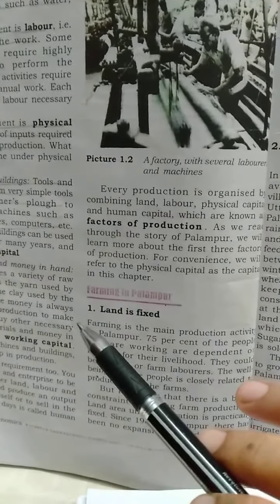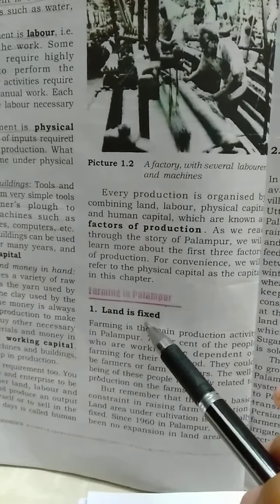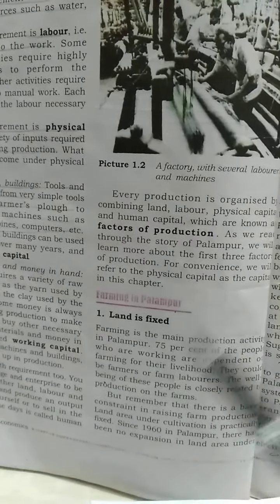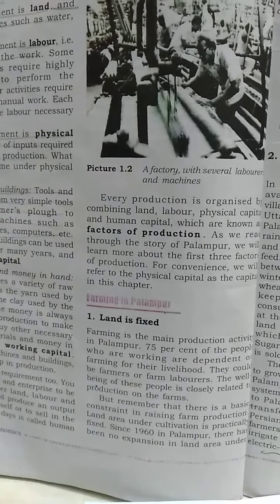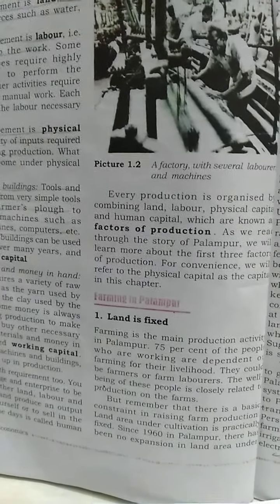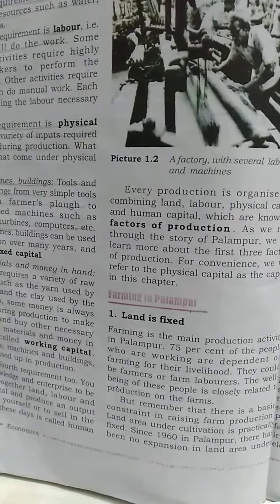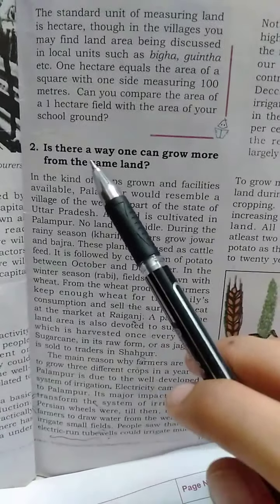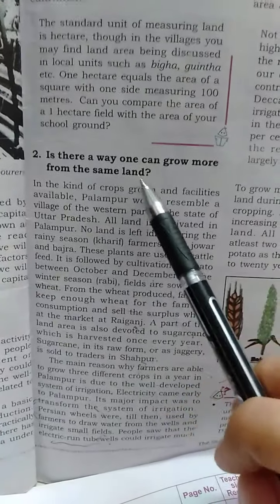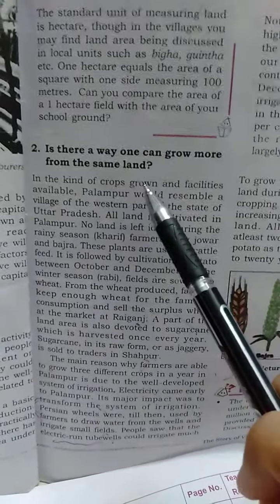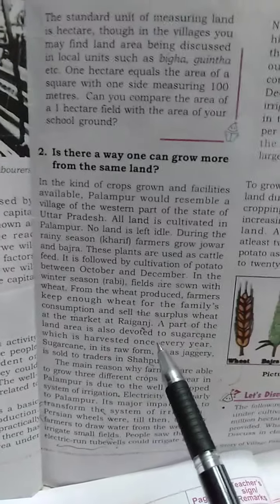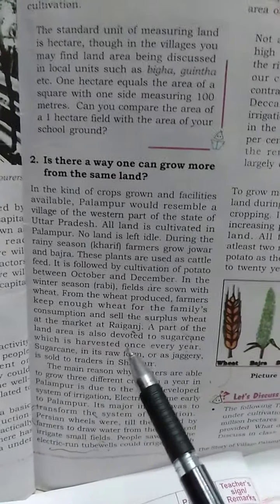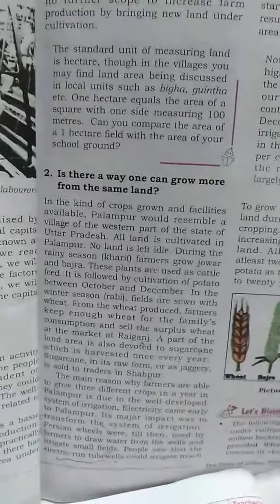The very first point was that land is fixed — no land remains idle, as wastelands in the village had been converted to cultivable land. The second point was whether one can grow more from the same land. Yes, that was multiple cropping, and here we discussed modern farming versus traditional farming methods.